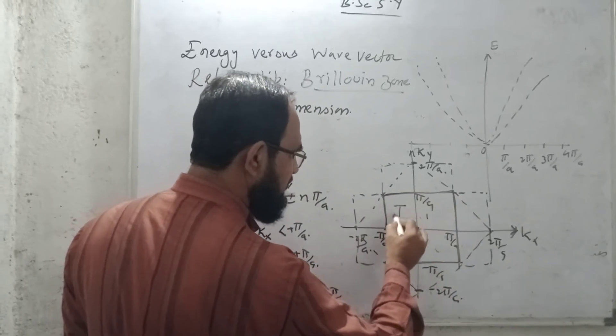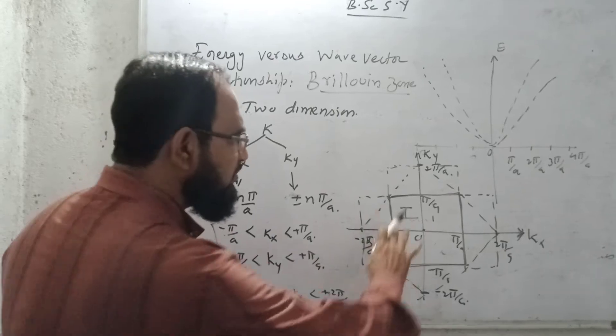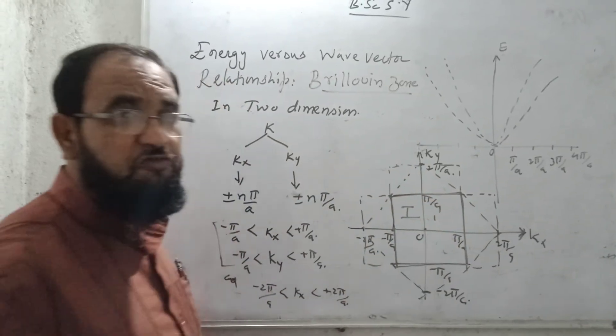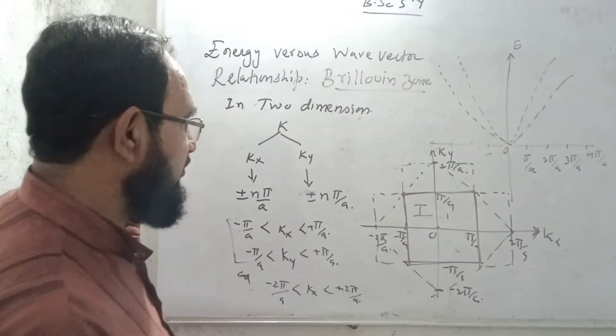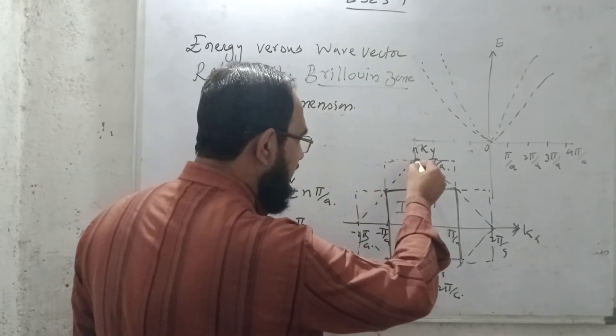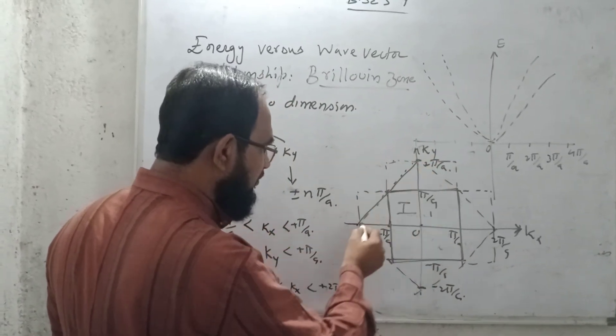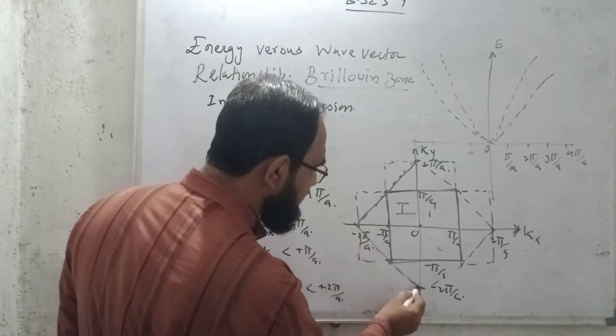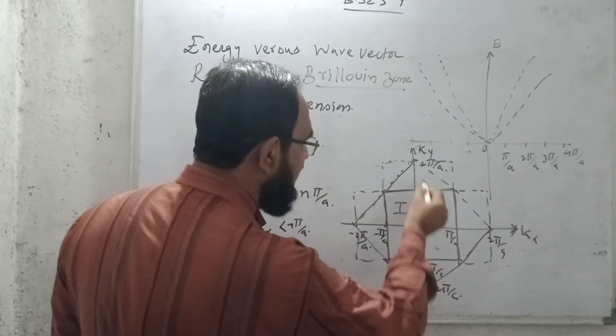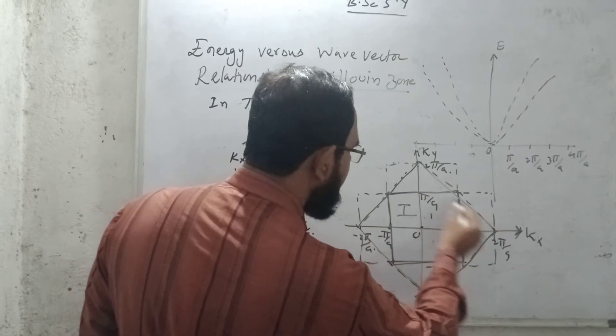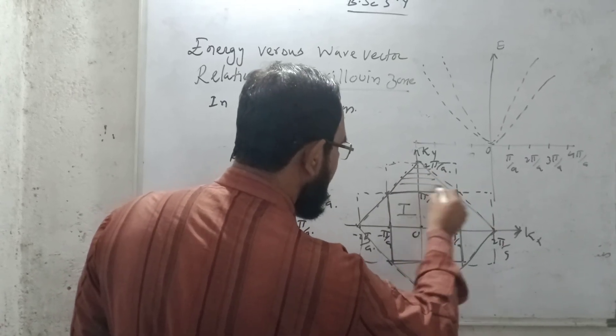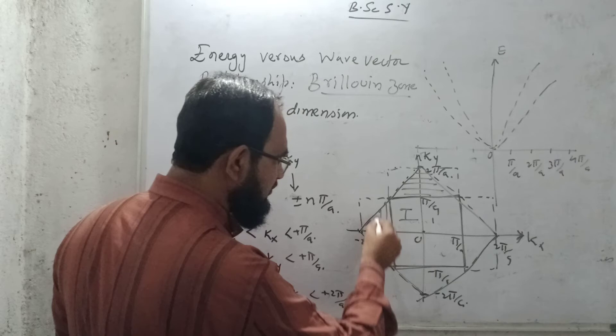It is called as the first Brillouin zone, first zone, means the total part. Now for the second Brillouin zone, I will join this one, means the value of KY is from minus 2π/A to plus 2π/A. This one will be the second Brillouin zone, so we can say that these lines will represent the second Brillouin zone.